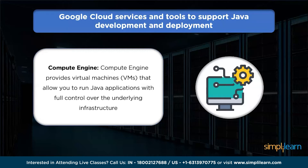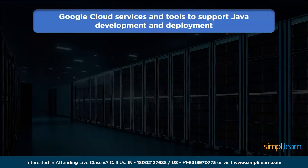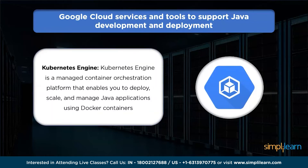Next, we have Compute Engine, which provides virtual machines that allow you to run Java apps with complete control over the underlying infrastructure. You can customize the VM configuration, install any required software or libraries, and optimize performance based on your specific needs. We also have Kubernetes Engine — a managed container orchestration platform that enables you to deploy, scale, and manage Java applications using Docker containers. It provides scalable and resilient infrastructure with features like auto scaling, load balancing, and rolling updates.